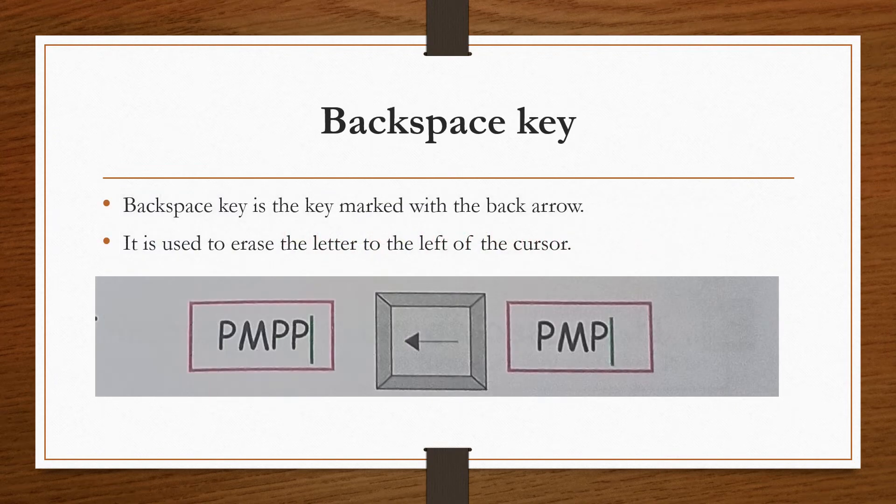Next in the series is backspace key. So backspace key is a key which is marked with back arrow. You can see here in the diagram. Now what is the purpose of this key? This key is used to erase the letter. Now it will erase the letter but to the left of the cursor. So children, you can see a line here, this is the cursor, and the backspace key will always erase the letter to the left of the cursor.